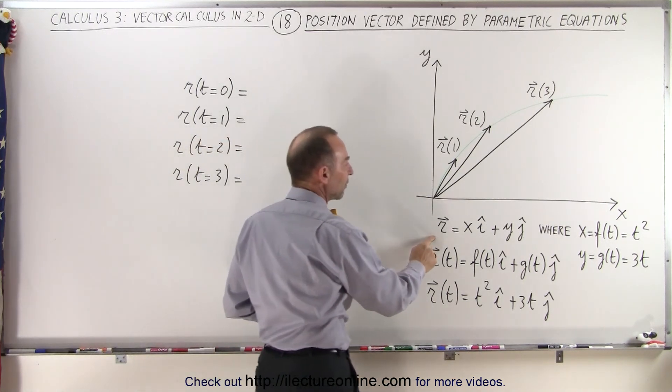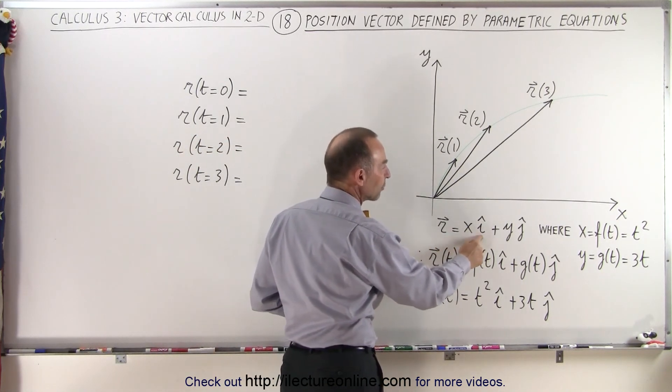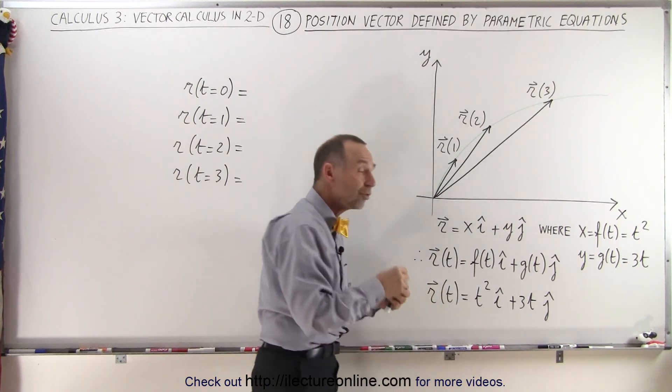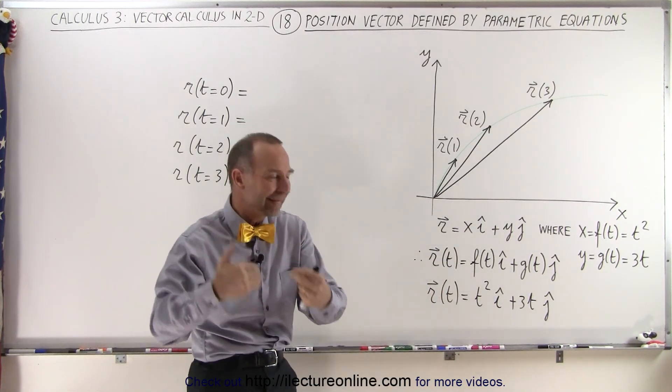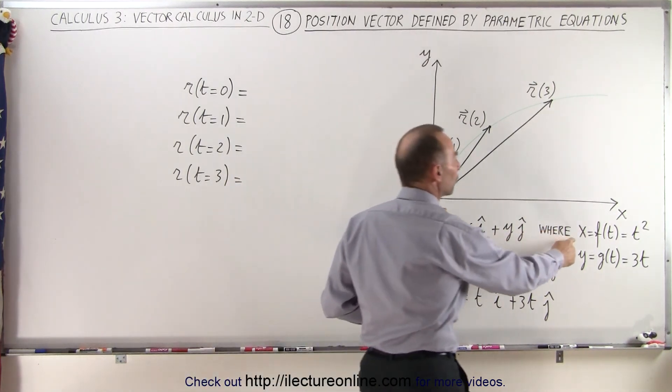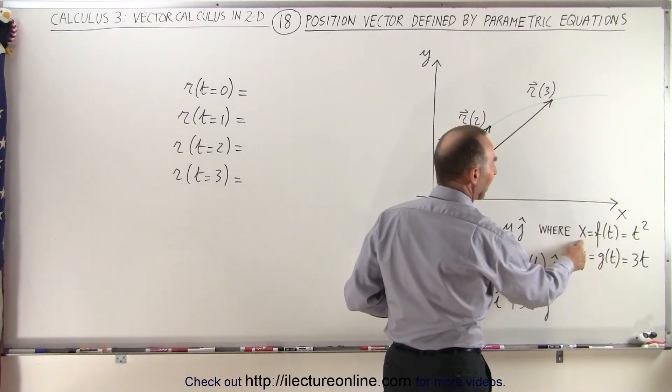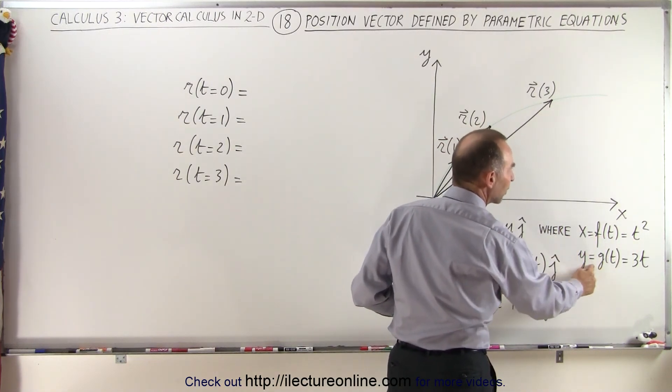First of all, we write the position vector in terms of an x component in the i direction plus a y component in the j direction. But those x and y components are therefore then written in terms of their parametric variables. So that x is a function of t, and y is another function of t.